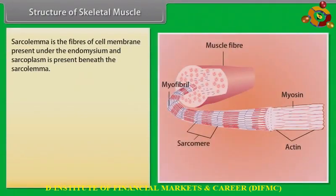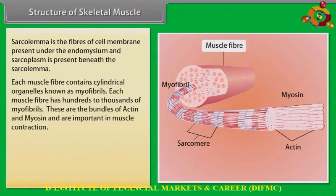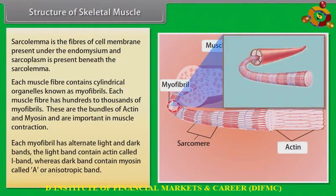Sarcolemma is the fiber of the cell membrane present under the endomysium, and sarcoplasm is present beneath the sarcolemma. Each muscle fiber contains cylindrical organelles known as myofibrils. Each muscle fiber has hundreds to thousands of myofibrils, which are bundles of actin and myosin and are important in muscle contraction.